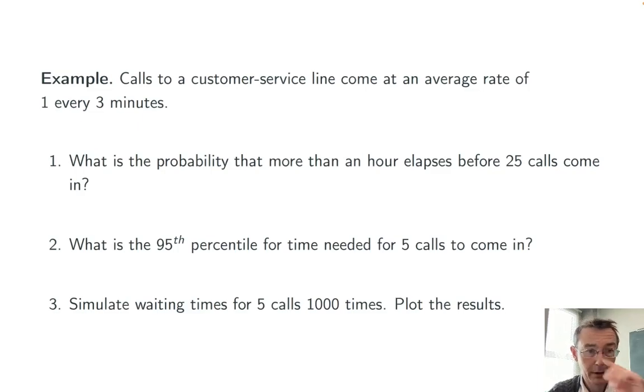Okay, let's do a few example problems. First, compute the probability that more than an hour elapses before 25 calls come in to a call center at which calls come in at an average rate of 1 every 3 minutes. Notice that even though the word rate is used, really what's being specified here is theta, the scale parameter. In this case, theta equals 3 minutes, so lambda equals 1 third. The average number of occurrences per minute is 1 third.